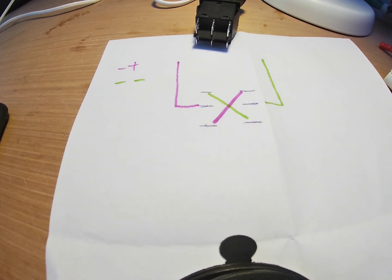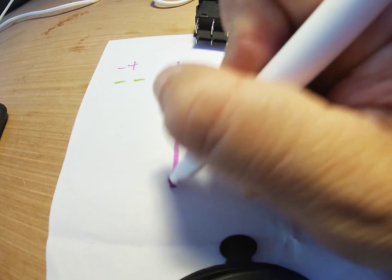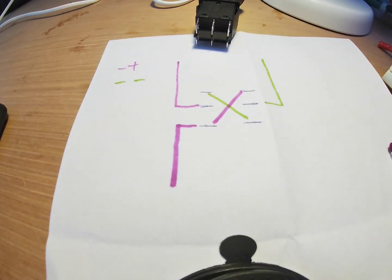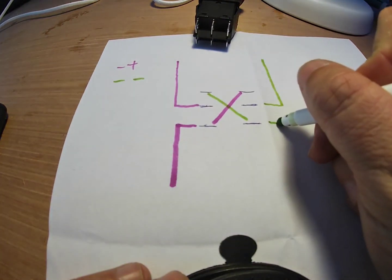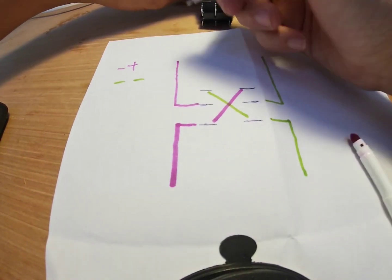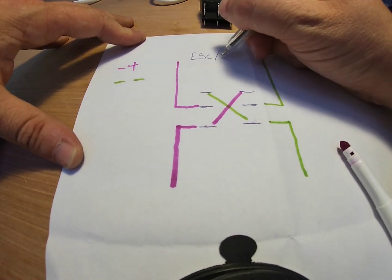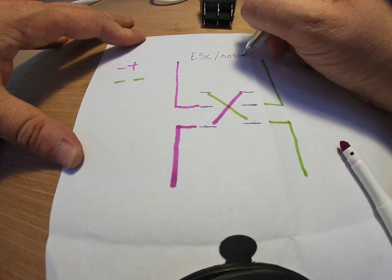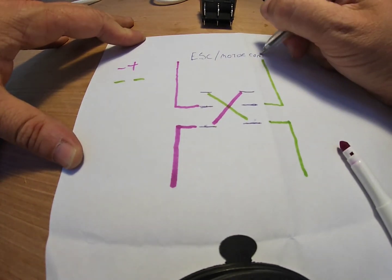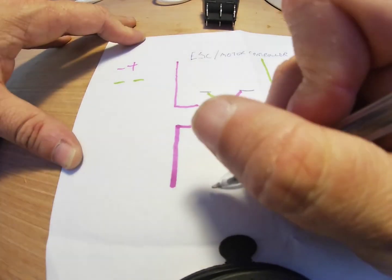So for our motor input that we had earlier on we're going to connect that to just here. The positive and our negative coming out. So we'll just write ESC stroke motor controller and motors.